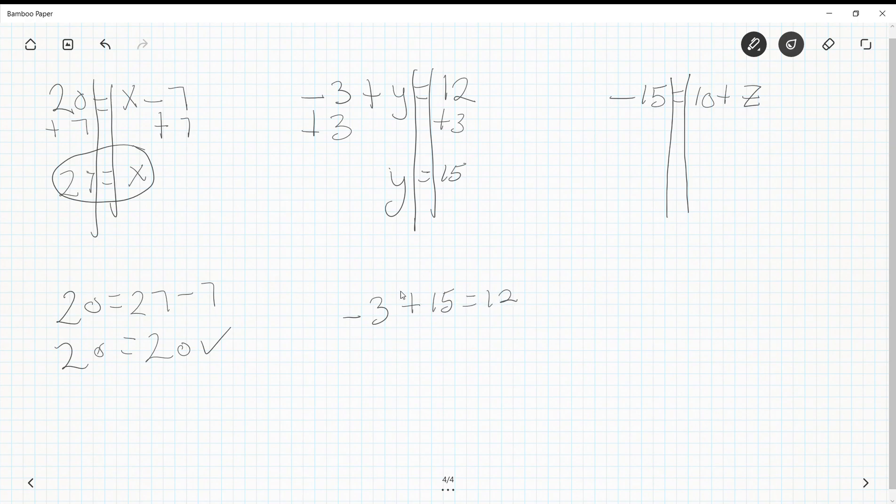Well, if we remember our integer rules, when I have a negative plus a positive, I keep the sign of the larger, so my answer is going to be positive, and I subtract the small from the large. So 15 minus 3 is 12.